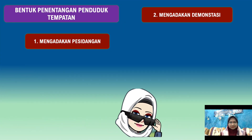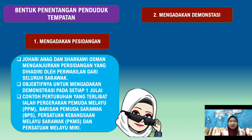Johari Anang dan Syakrawi Usman menganjurkan persidangan yang dihadiri oleh perwakilan dari seluruh Sarawak bertujuan untuk mengadakan demonstrasi, terdiri daripada pertubuhan PPA, BPS, Persatuan Kebangsaan Melayu Sarawak (PKMS) dan Persatuan Melayu Mir.